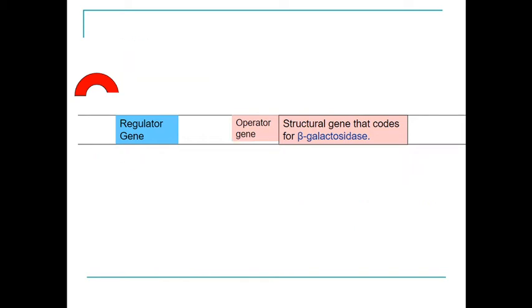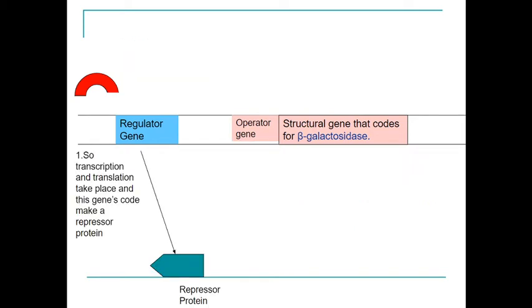Let's see what happens if we have lactose present. Again, first of all, transcription and translation take place and the repressor protein is made. We now have lactose, which is an inducer. This will enter the cell.